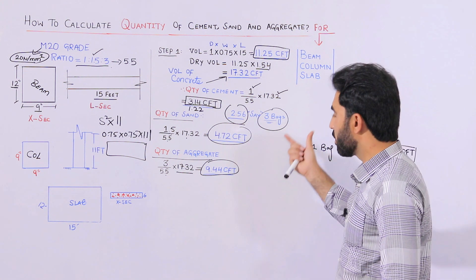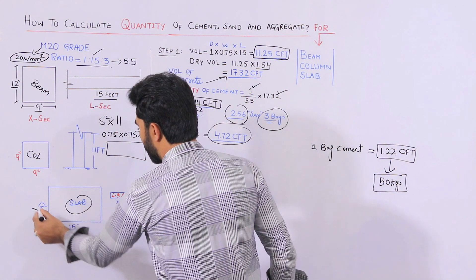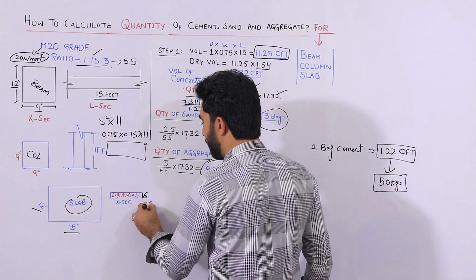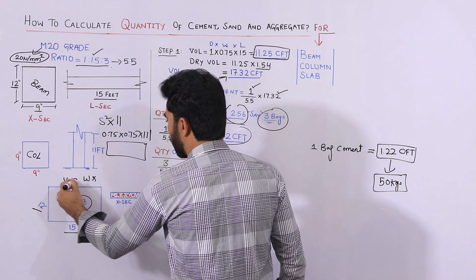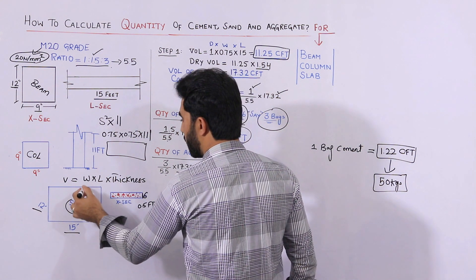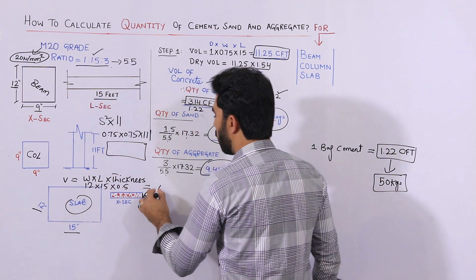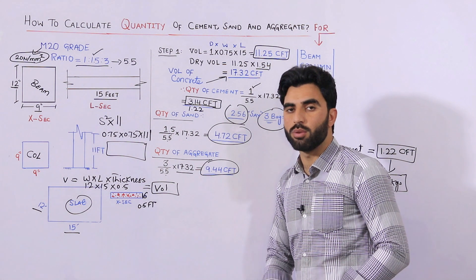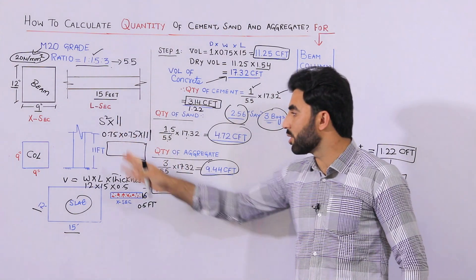For the RCC slab, its width is 12 feet, length is 15 feet, and its depth or thickness is 6 inches, which is 0.5 feet. Volume equals width × length × thickness, so 12 × 15 × 0.5 feet. From this volume, convert to dry volume, and then you can find the quantity of cement, sand, and aggregate the same way as discussed for the beam.